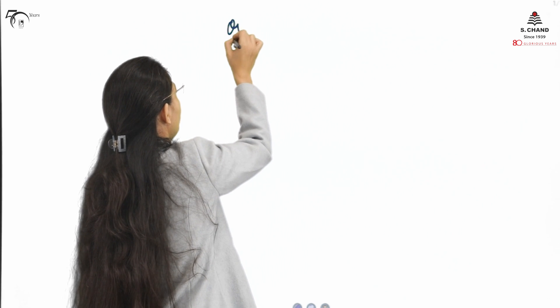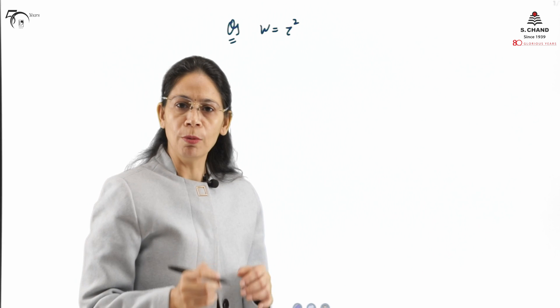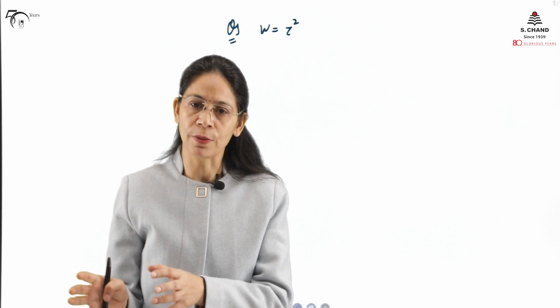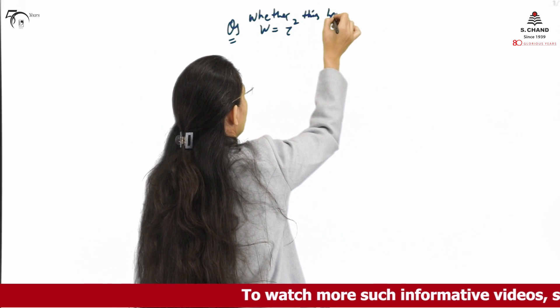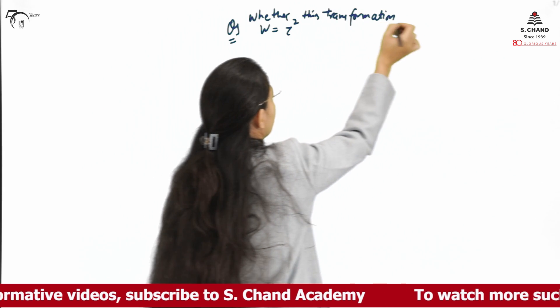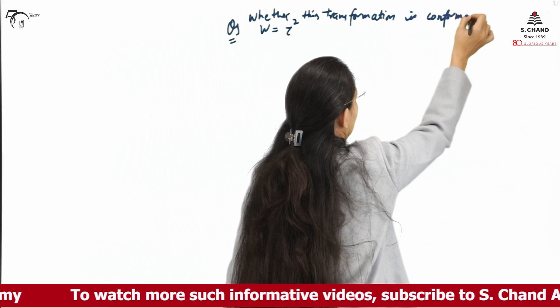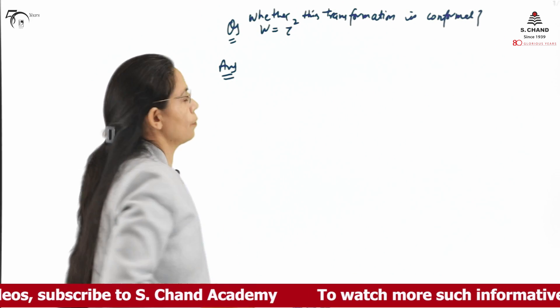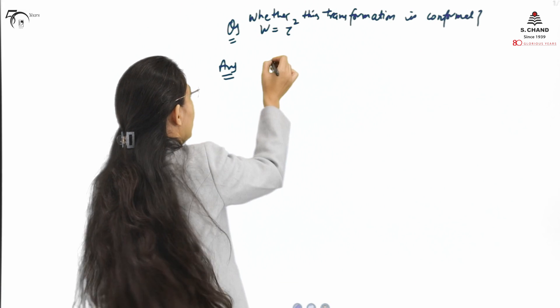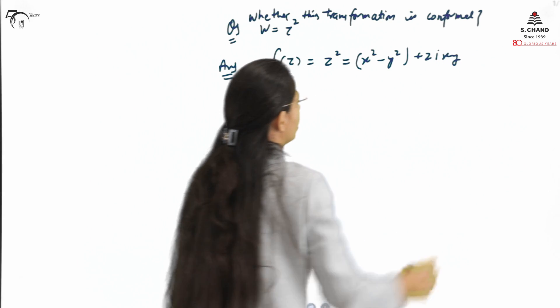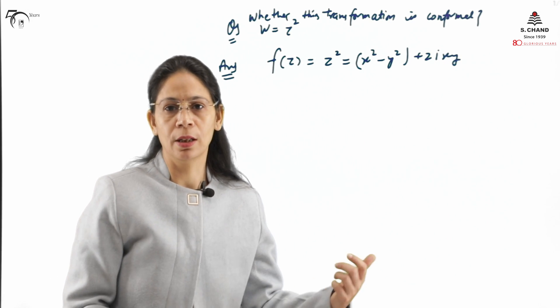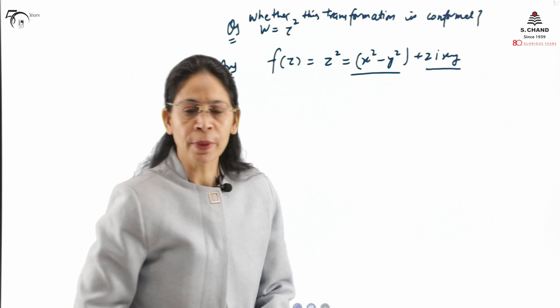We will take one example to make it clear when a complex transformation is conformal or not. In the previous part we took the example W equals Z squared to show how a transformation maps from the XY plane to the UV plane. We will now check whether this transformation is conformal. The condition for conformal mapping is that F(z) must be analytic. Here F(z) is Z squared, which resolves to X squared minus Y squared plus 2i·XY — a polynomial, so it is analytic.